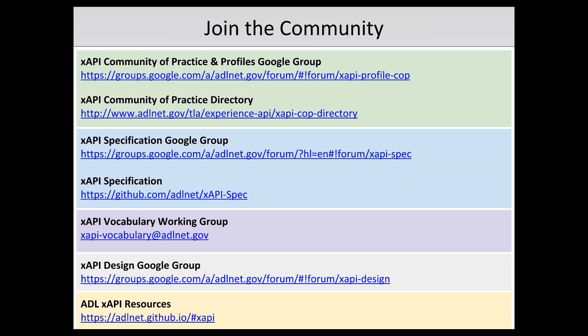The group associated with the XAPI Specification meets every Wednesday at about 2 to 2:30 p.m. Eastern Daylight Time to discuss the actual specification. You should also check out the XAPI Specification itself, which is available via GitHub, as are ADL XAPI Resources. Some of you are already familiar with the XAPI Design Google Group. We'll be probably getting back to that pretty soon to talk about the next season of the Design Cohort. Please also check out the XAPI Vocabulary Working Group, run by Jason Haig, who has had some pretty interesting meetings lately.